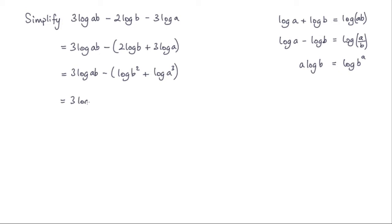Still leaving this first part as it is, so 3 log ab minus. And here I've got log b squared plus log a cubed. And I know from this first rule here, I can take these ab terms and put it in terms of a single log. So what I'm going to get is log of a cubed b squared.